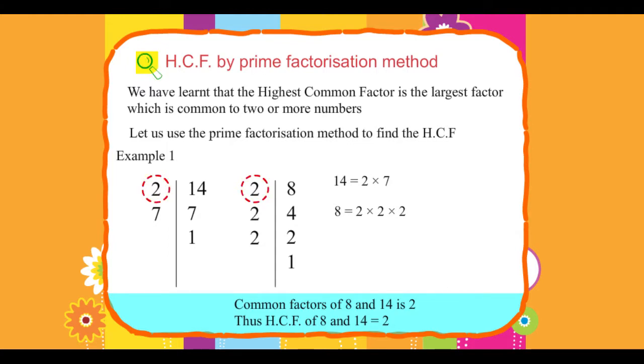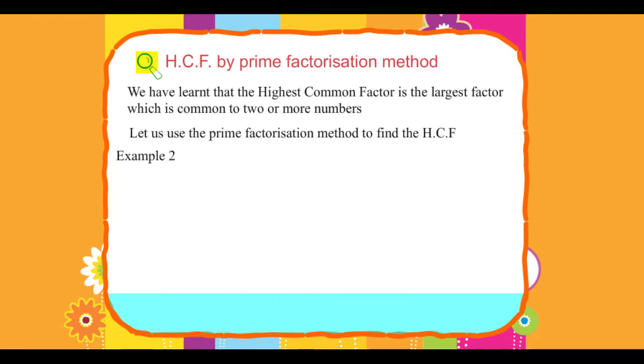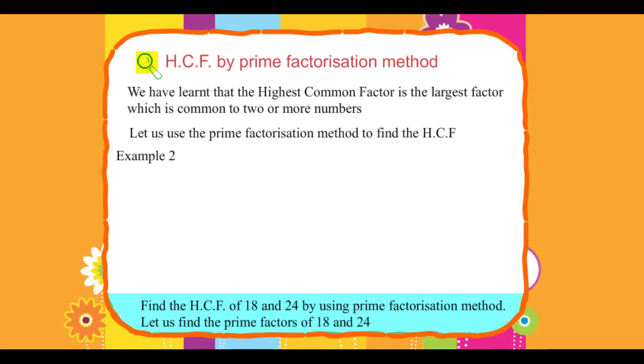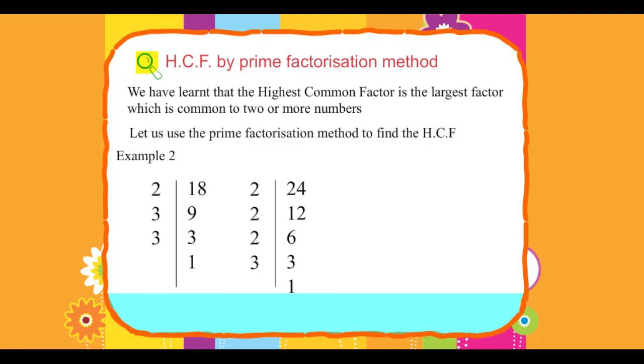Thus, HCF of 8 and 14 = 2. Example 2: Find the HCF of 18 and 24 by using prime factorization method. Let us find the prime factors of 18 and 24, then circle the common factors.